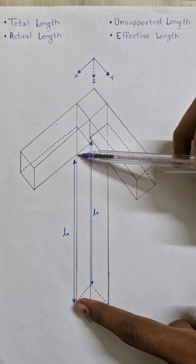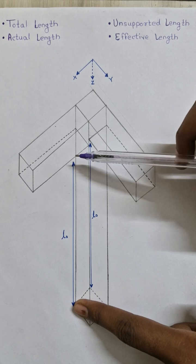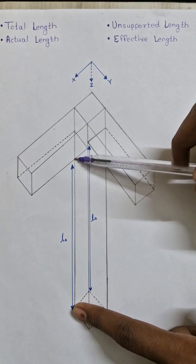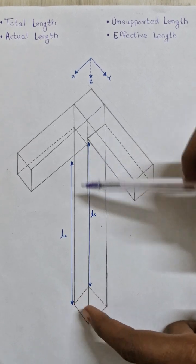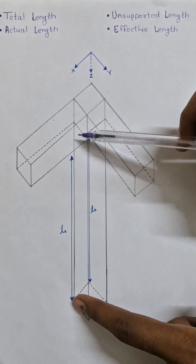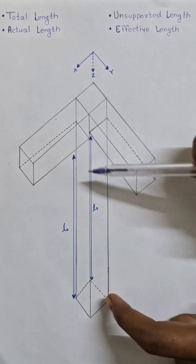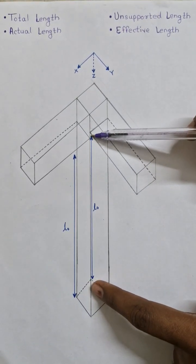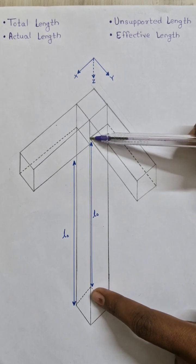Unsupported length is the clear length of the column. It can be different for the different faces of the column. For this column, for this face, this is the unsupported length and for this face, this is the unsupported length.